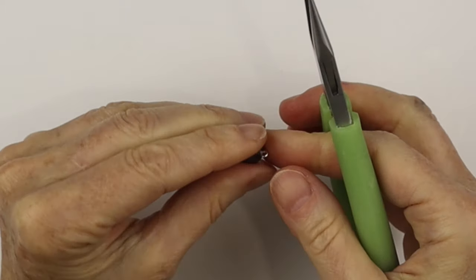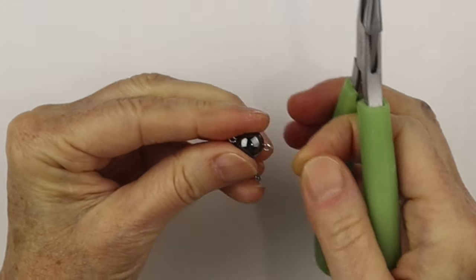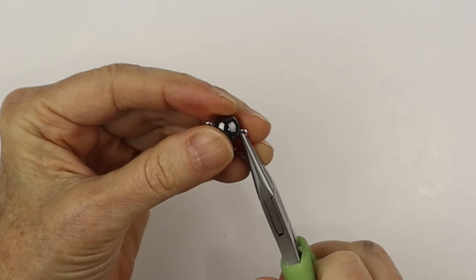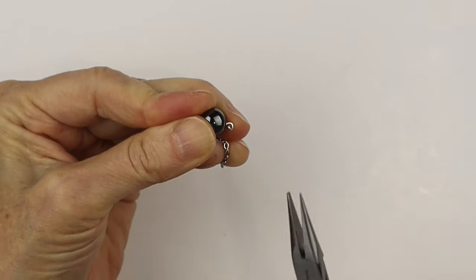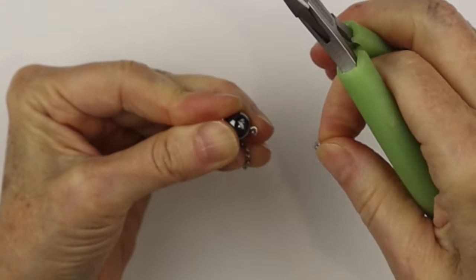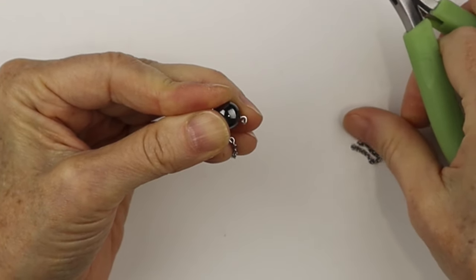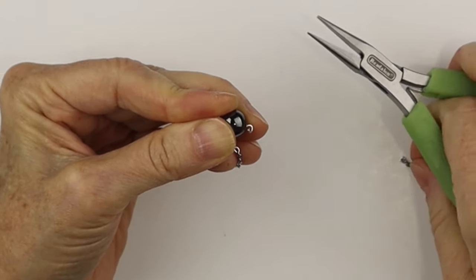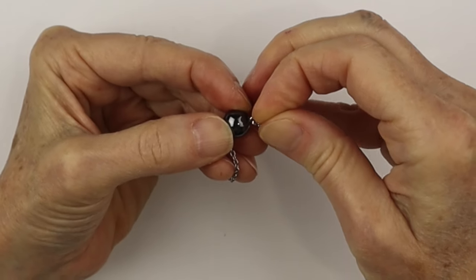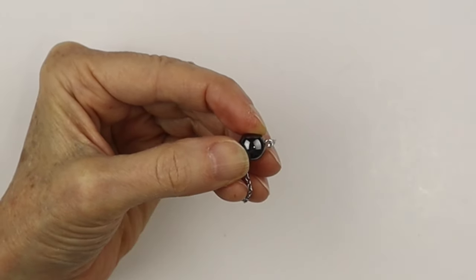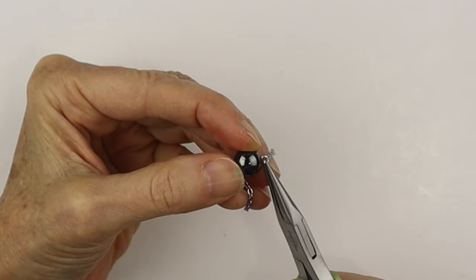Flip it around, open up the loop, and then we'll slide on the other chain. It's a little bit tricky with this small chain. We're just gonna slide it right on there and close it up with the chain nose pliers.